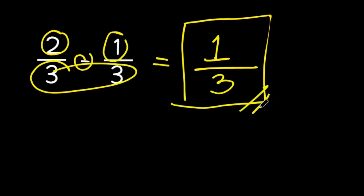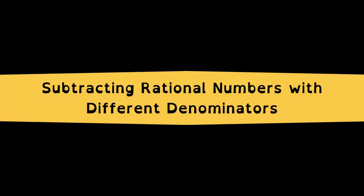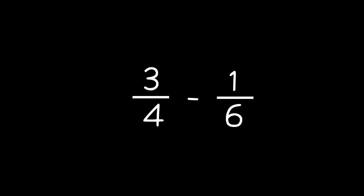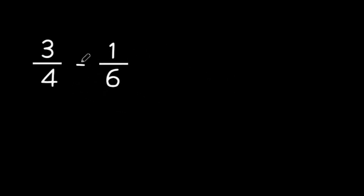Now let's level up our subtraction skills with rational numbers that have different denominators. Imagine we have the rational numbers three-fourths and one over six. How do we subtract them? To subtract rational numbers with different denominators, we need to make their denominators the same. This will allow us to perform the subtraction easily. Let's go step by step.